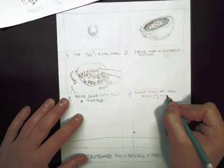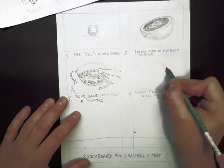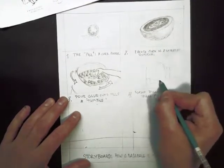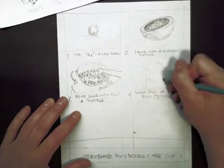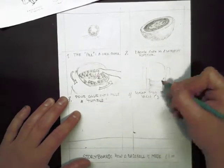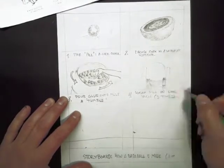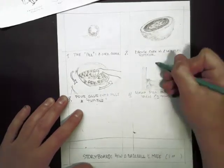Next the pills get wrapped in yarn. That happens three times with wool yarn and so we'll just show that with one frame and note that it happens three times. We don't need to draw the same event happening over and over again.